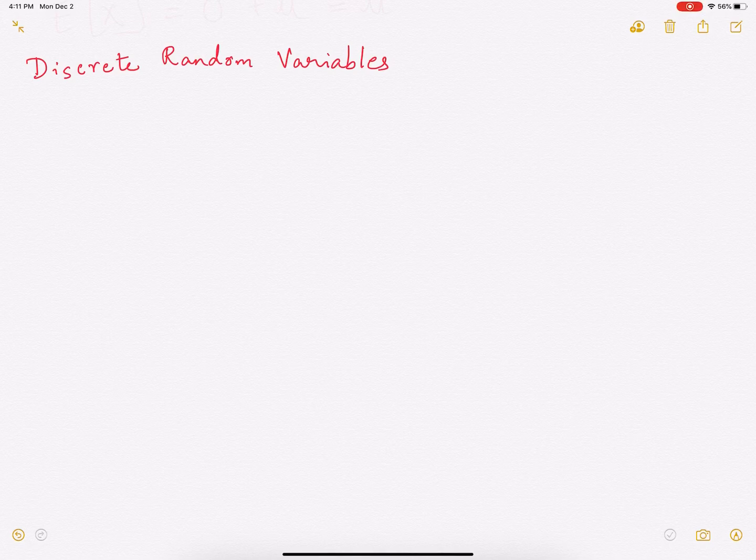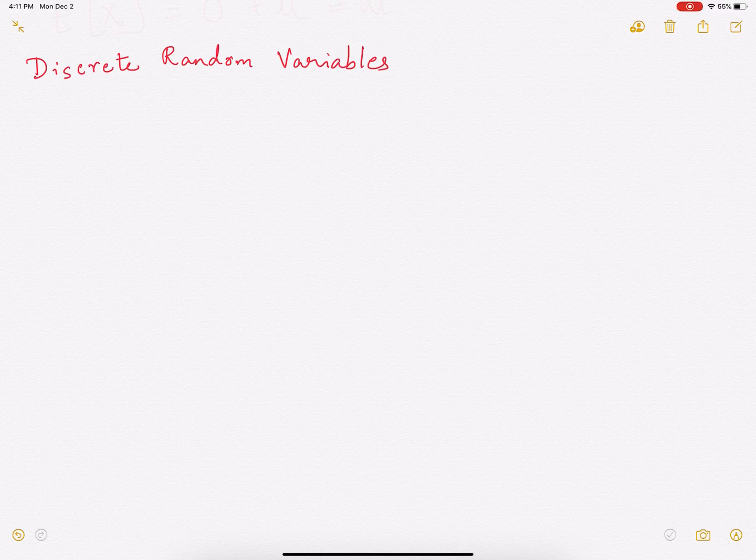Hi everyone, in this video we are going to talk about discrete random variables. Now discrete random variable is a variable that can take a countable number of possible values.